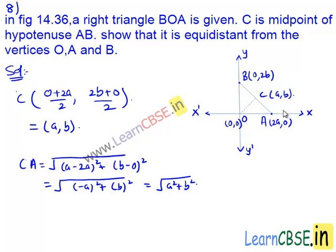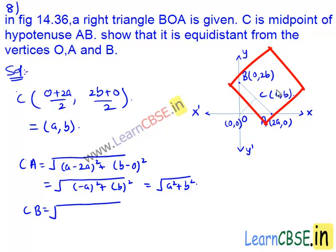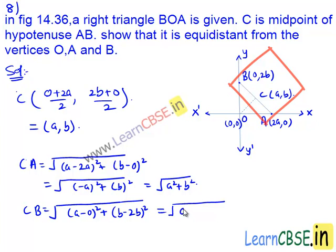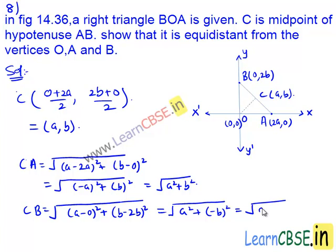Now let's find the length CB. CB equals the square root of (a minus 0) whole square plus (b minus 2b) whole square, which is equal to the square root of a square plus (minus b) whole square, that equals the square root of a square plus b square.